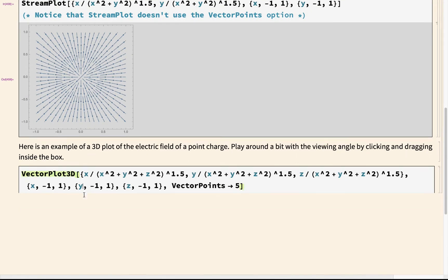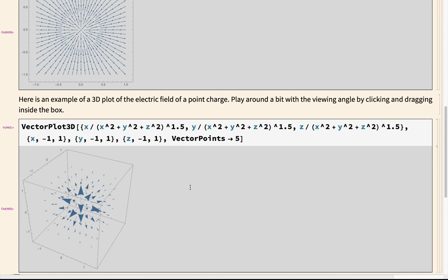VectorPlot3D works a lot like VectorPlot, it just allows you to visualize a three dimensional function. So notice the differences here: this is a three dimensional vector. So I'm giving it a list of three values that are specifying the length of the vector in the x, y, and z direction. I have to give it a three dimensional range then. So the range I want in those three dimensions. And then I have the same option of VectorPoints.